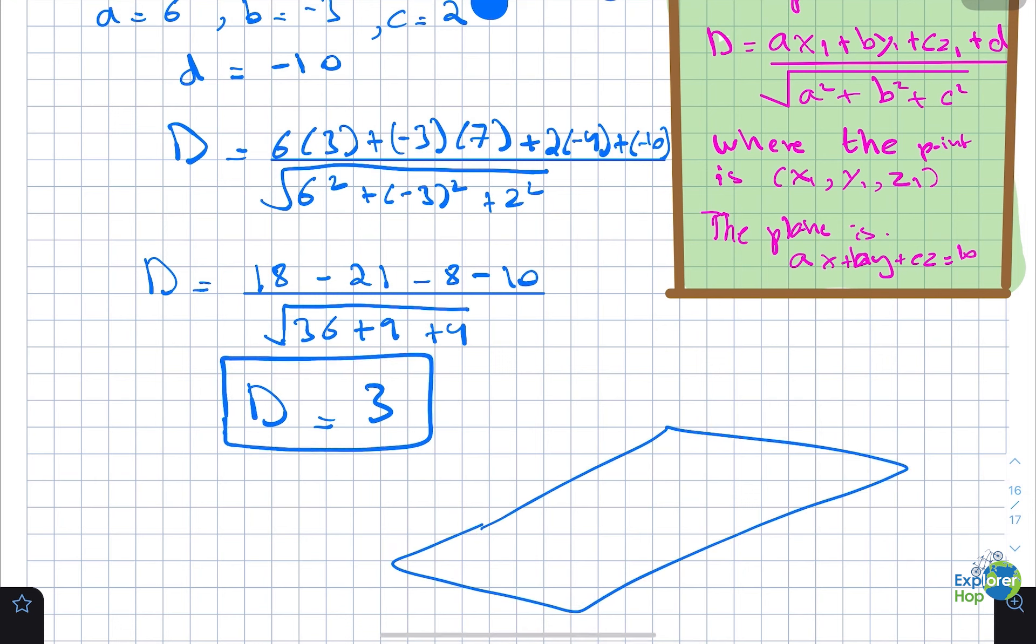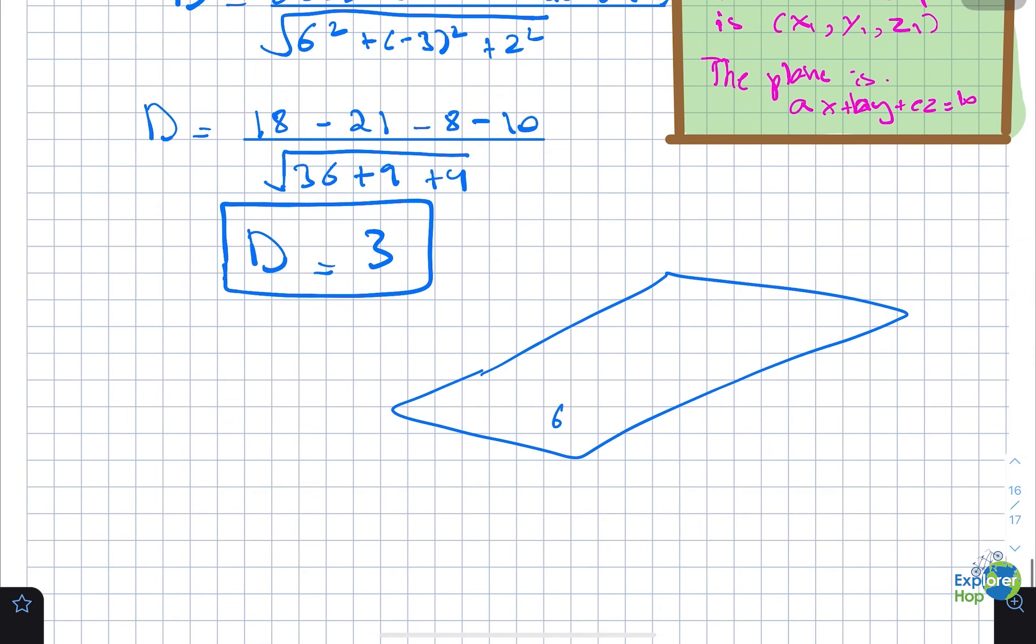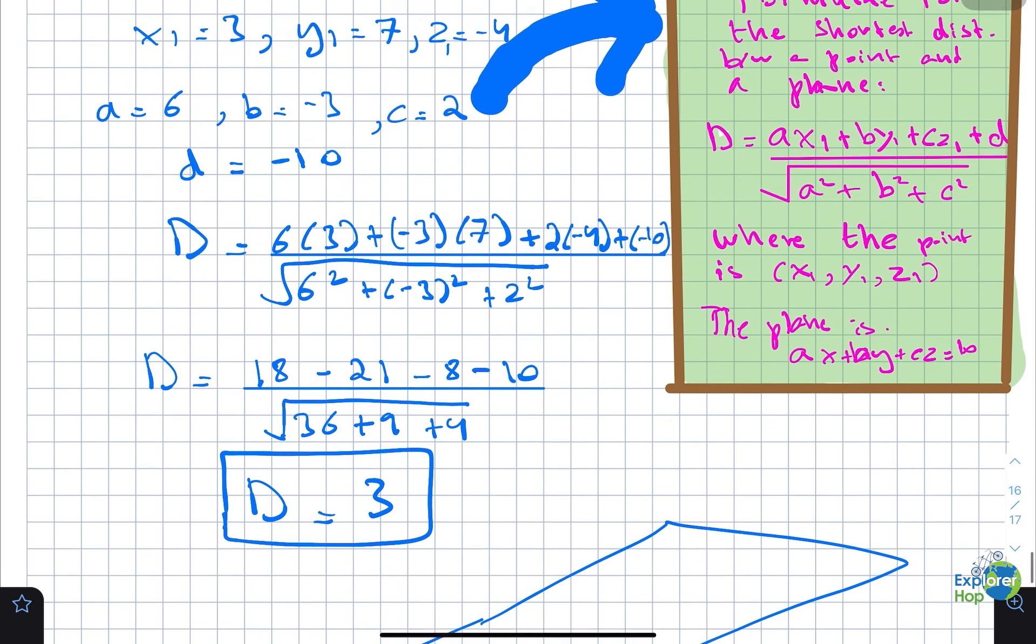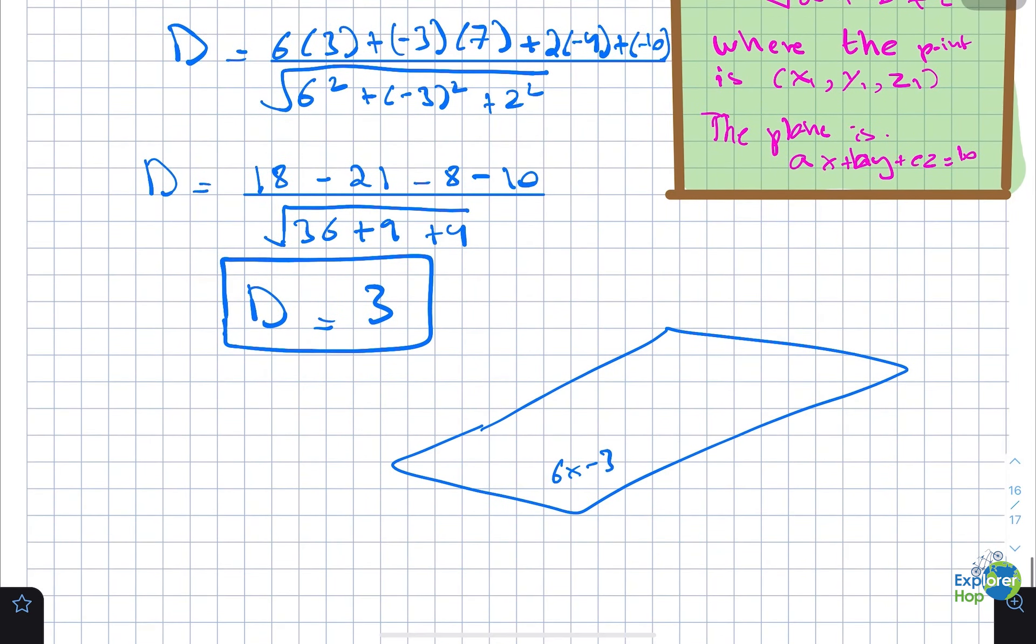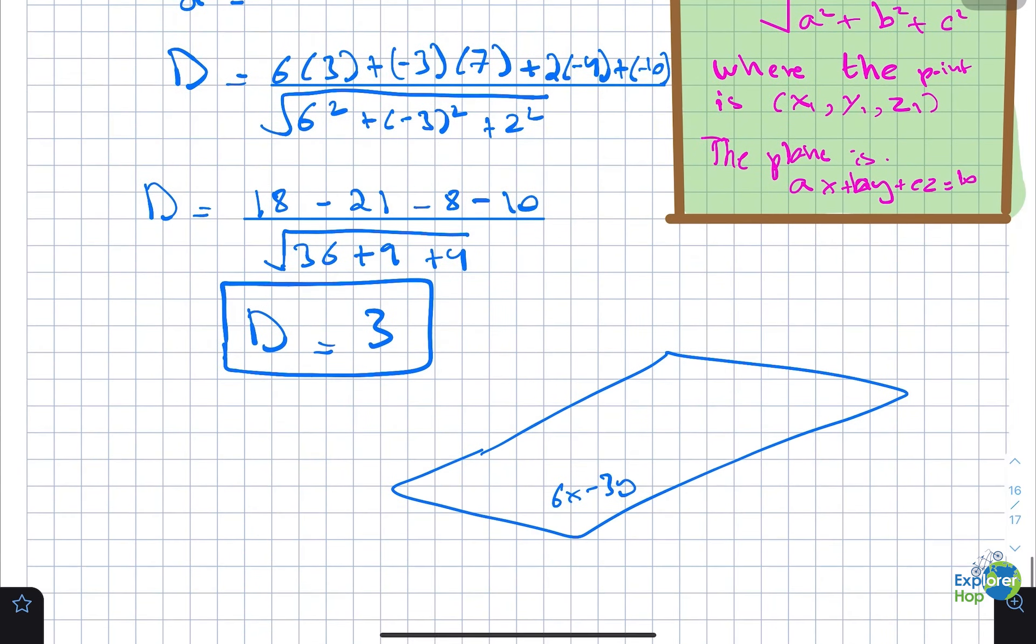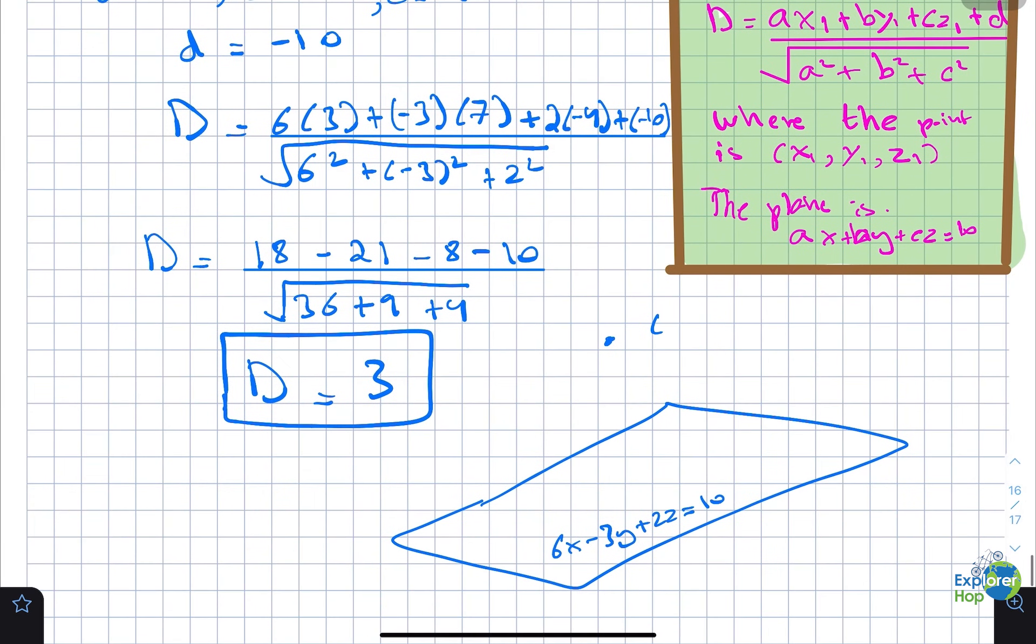So if we have this plane - this plane is 6x minus 3y plus 2z equals 10 - and this point right here which is (3, 7, -4), the shortest distance would be the perpendicular distance between them.